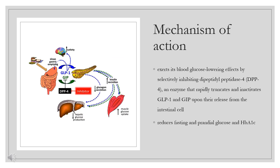Mechanism of Action: Saxagliptin is a dipeptidyl peptidase-4 (DPP-4) inhibitor anti-diabetic for the treatment of type 2 diabetes. DPP-4 inhibitors work by affecting the action of natural hormones in the body called incretins. Incretins decrease blood sugar by increasing consumption of sugar by the body, mainly through increasing insulin production in the pancreas and by reducing production of sugar by the liver. DPP-4 is a membrane-associated peptidase found in many tissues, lymphocytes, and plasma. DPP-4 has two main mechanisms of action: an enzymatic function and another mechanism where DPP-4 binds adenosine deaminase, which conveys intracellular signals via dimerization when activated.